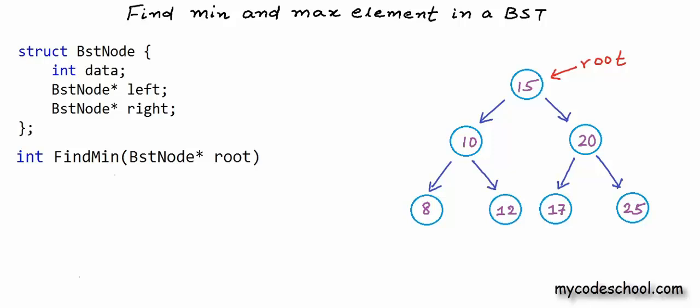If we have a pointer to the root node and we want to find the minimum element in BST, then from root we need to go left as long as it's possible to go using the left links. Because in a BST for all nodes, nodes in left have lesser value and nodes in right have greater value. So we need to go left as long as it's possible.